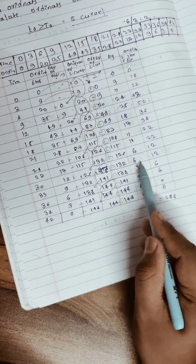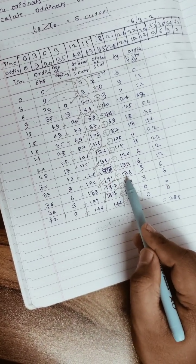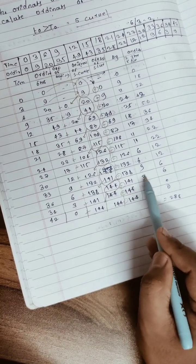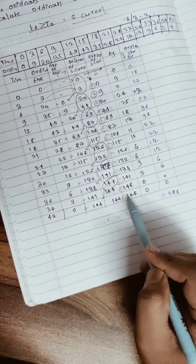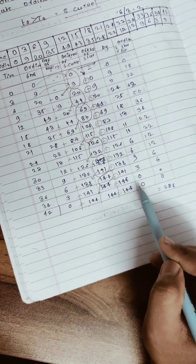138 minus 132 is 6, 141 minus 138 is 3, 144 minus 141 is 3, and 144 minus 144 is 0.